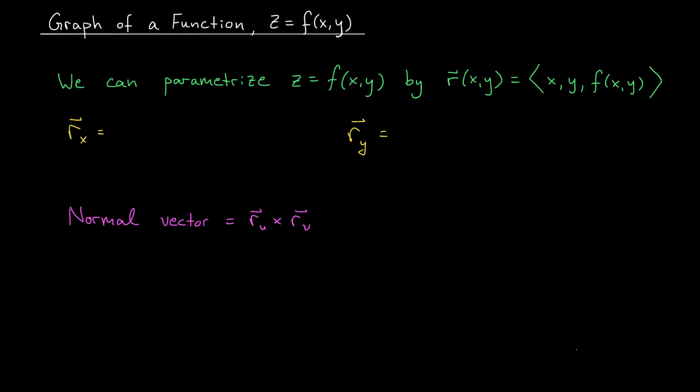I'm going to end this video by considering the special case where we're dealing with the graph of a function z equals f of xy. We learned how to find the equation of a tangent plane to such a surface way earlier in our course. We just have to look at the partial derivatives with respect to x and y. But the nice thing is this process that we've outlined allows us to very easily find a normal vector to our curve at a given point. And it saves us from computing a cross product every single time.